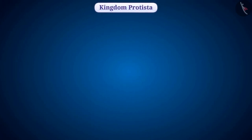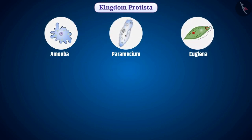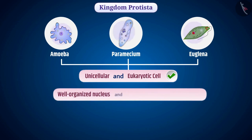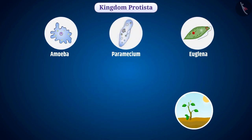Now let us know about the kingdom Protista. The kingdom Protista mainly consists of aquatic organisms such as amoeba, paramecium, euglena, etc. Most organisms of this kingdom are unicellular but have a body made up of eukaryotic cells — that is, the cell has a well-organized nucleus and other membrane-bound organelles. Some of these organisms have a cell wall and some do not, and some have structures such as cilia and flagella for locomotion.